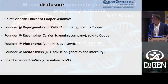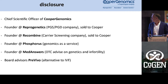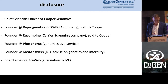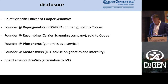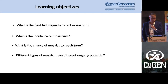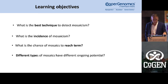A few disclosures: I'm the Chief Scientific Officer of Cooper Genomics, and for historical reasons I also have a conflict of interest because I founded Reprogenetics and Recombine. What I want to give you as learning points for this lecture is a good understanding of mosaicism.